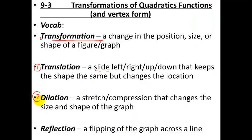The next type is a dilation. To remember dilation, think of going to the optometrist and getting your eyes dilated — drops make your pupil really big, so you're changing the size. A dilation is either a stretching out, increasing in size, or a compression, decreasing in size. And when you change the size, depending on what kind of graph it is, it will also change the shape. Dilations are primarily stretching or shrinking a graph.